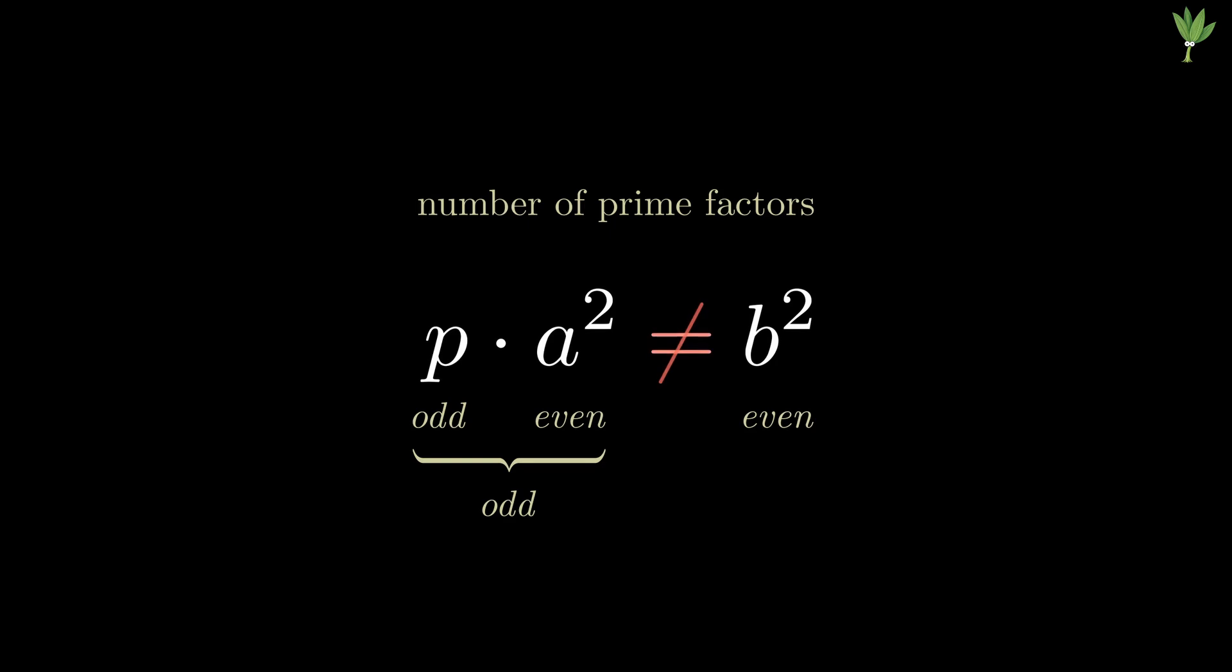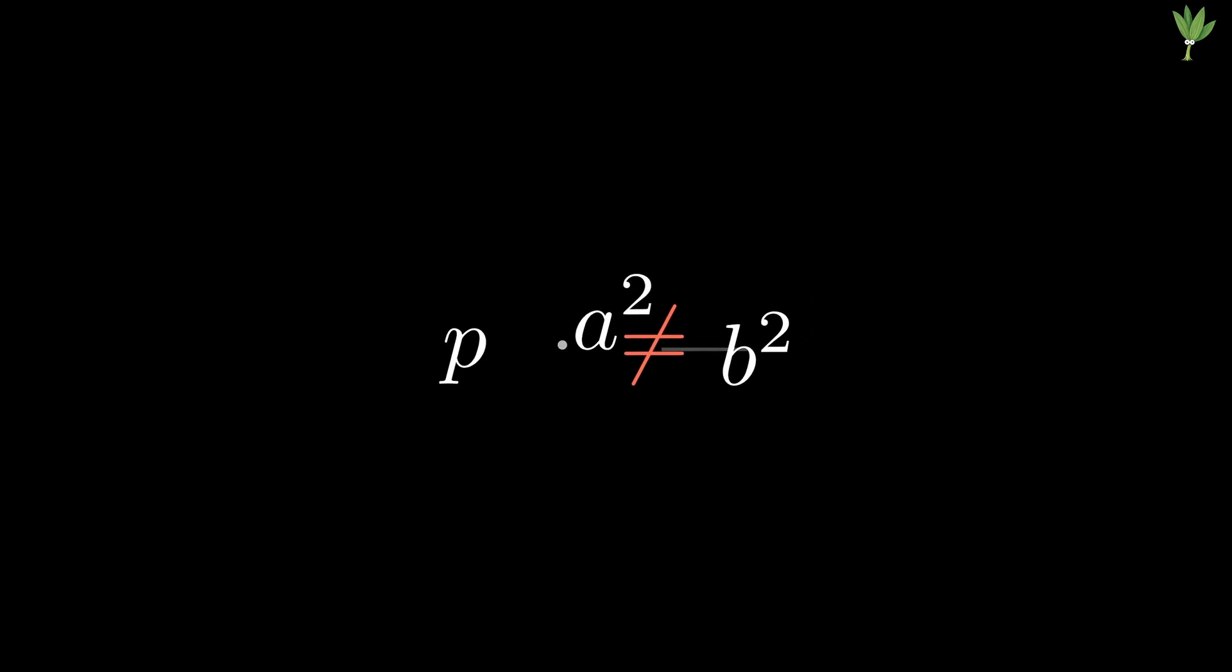This is a contradiction. The left side of our equation has an odd number of prime factors, and the right side has an even number of prime factors. So that means that our original assumption that the square root of p is a divided by b is wrong. That means that the square root of any prime number is irrational.